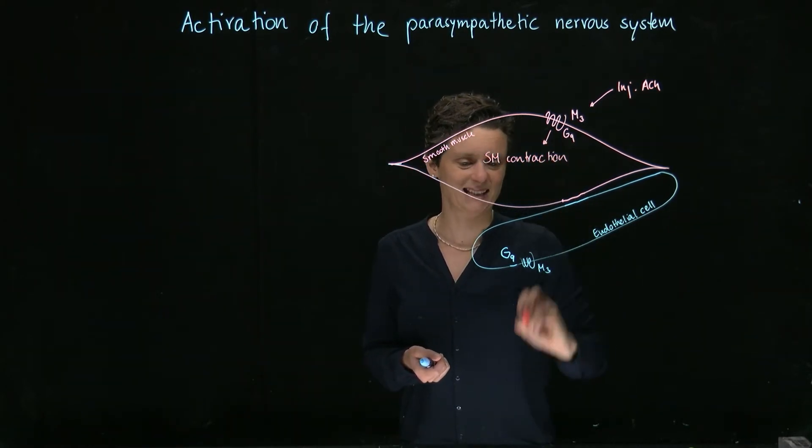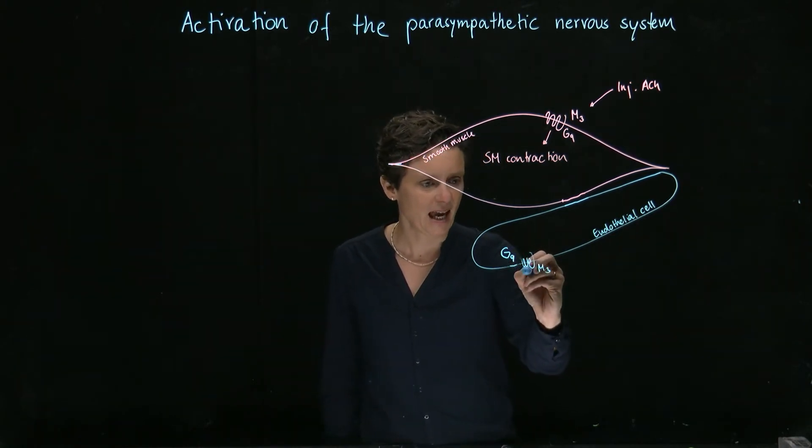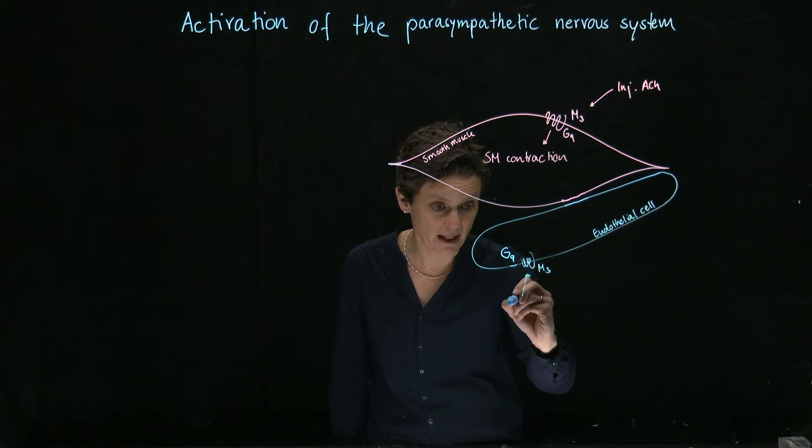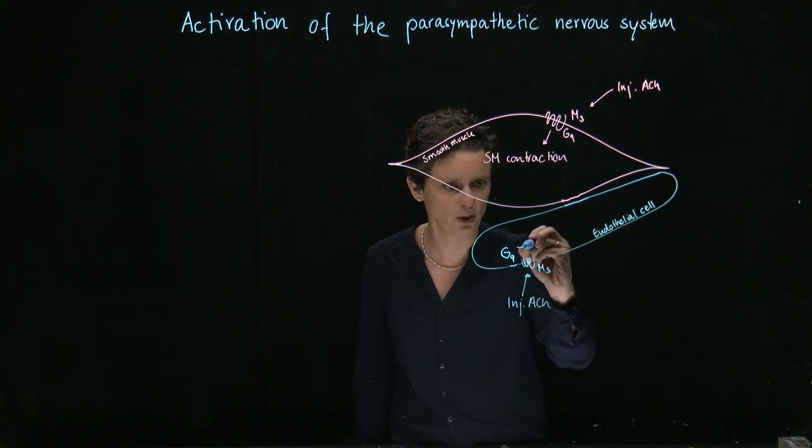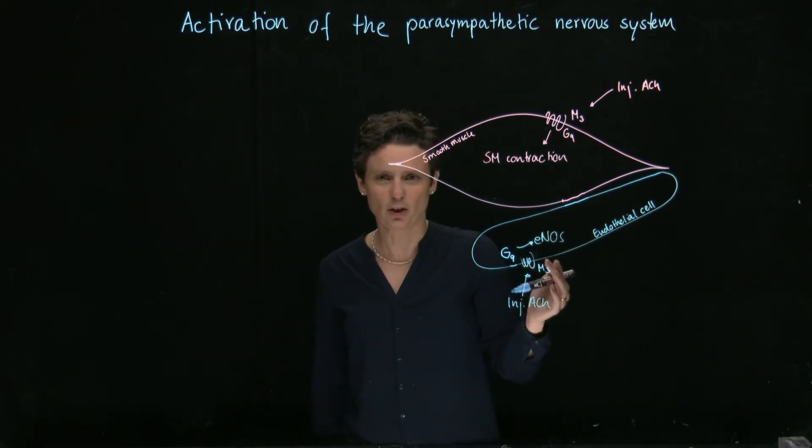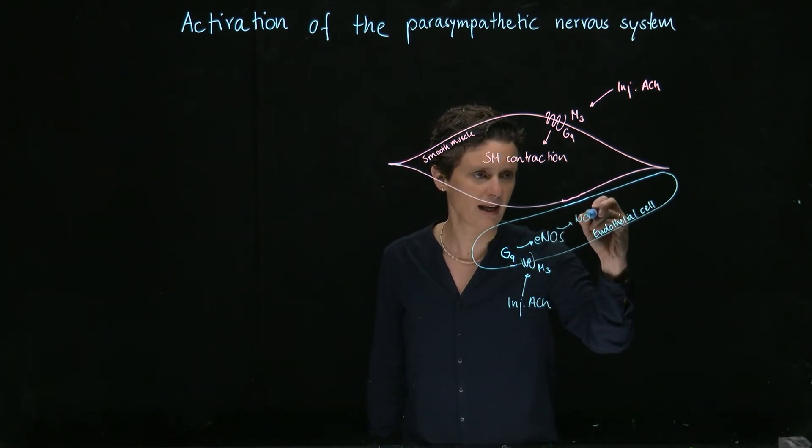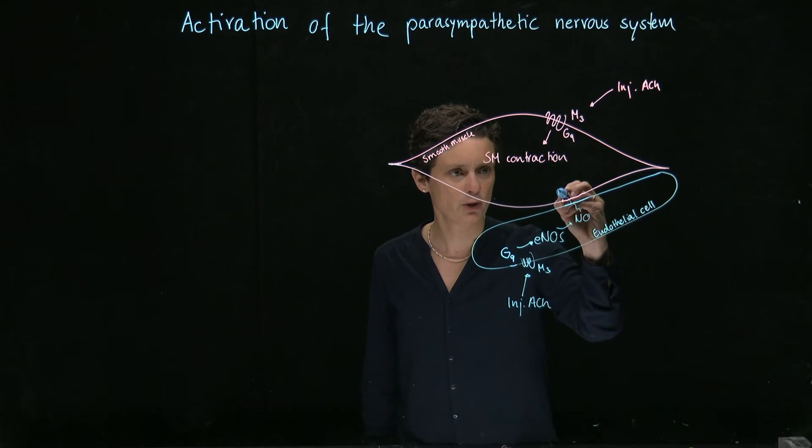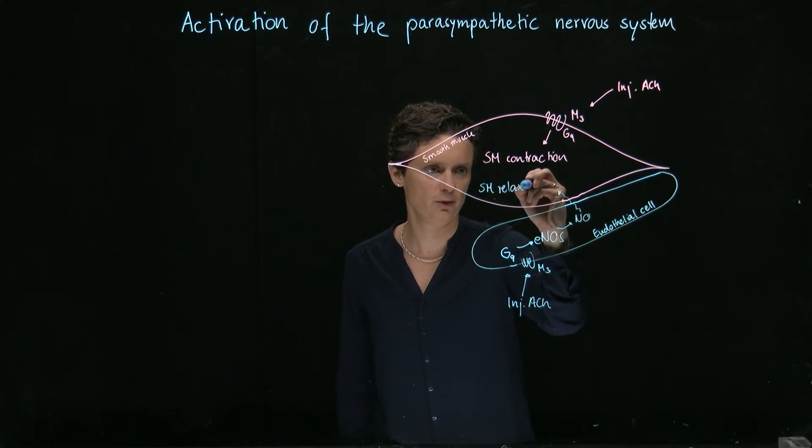On the other hand, M3 receptors are also found on the endothelial cells. And if you activate them with drugs, for example, with injected acetylcholine, this is going to lead to the activation or increased synthesis of eNOS, endothelial NO synthase. And therefore, you're going to make more NO, this is a gas, which is going to lead to smooth muscle relaxation. It can diffuse around.